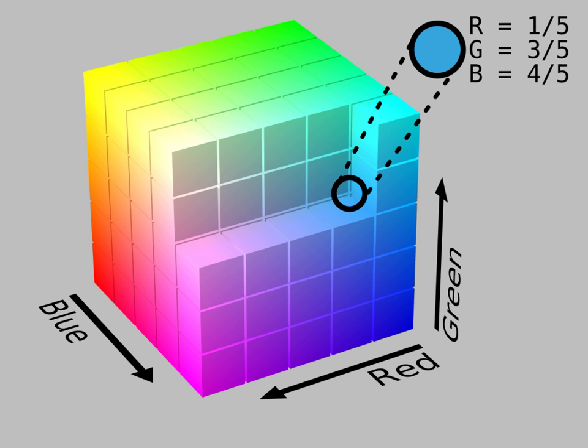RGB spaces are generally specified by defining three primary colors and a white point. In the table below the three primary colors and white points for various RGB spaces are given. The primary colors are specified in terms of the CIE 1931 color space chromaticity coordinates.